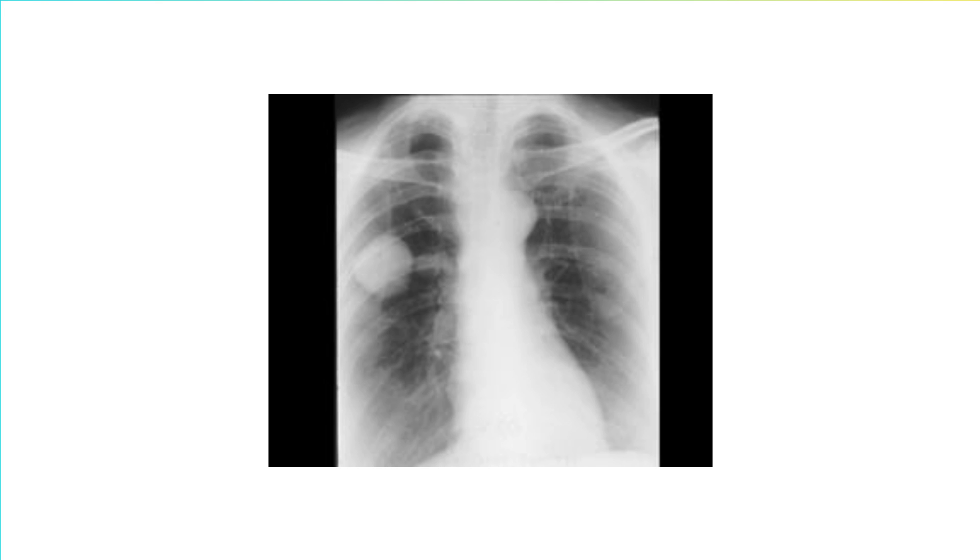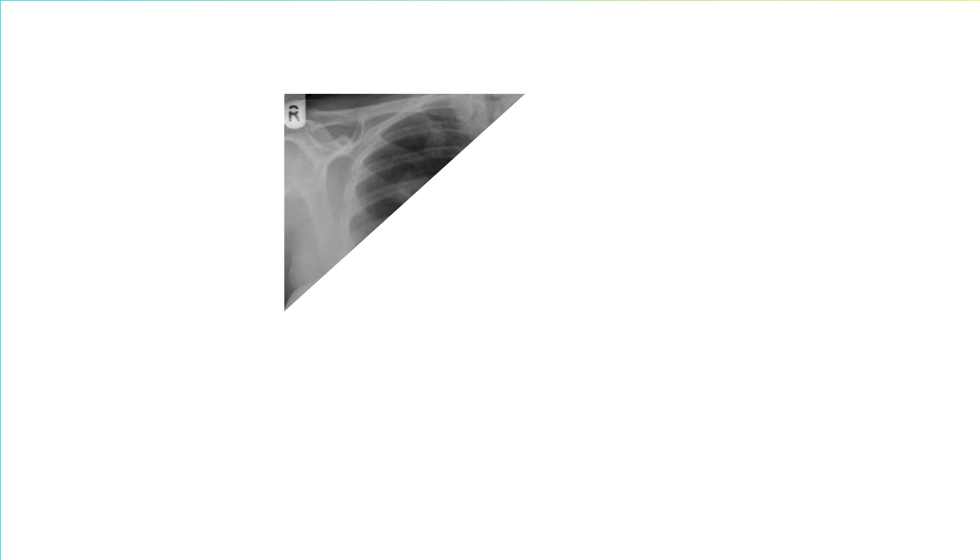This is a chest x-ray. As you can see, there is a coin-shaped lesion in the mid zone of the right lung field. It can be easily seen. This is the coin lesion. How do we approach it? We'll discuss.